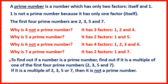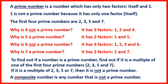To find out if a number is a prime number, you can find out if it is a multiple of one of the first four prime numbers, which are 2, 3, 5 and 7. If it is a multiple of either 2, 3, 5 or 7, then it is not a prime number. A composite number is any number that is not a prime number.